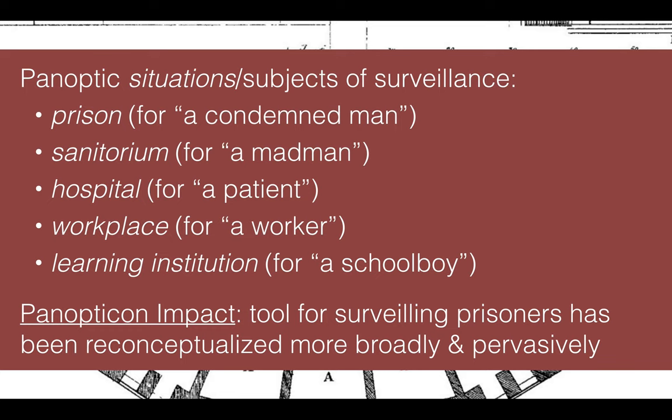Foucault extends the Panopticon idea beyond the prisoner to a range of subjects of surveillance. A prison holds a condemned man; a sanatorium holds a madman; a hospital holds a patient; a workplace holds a worker; and a learning institution holds a schoolboy or schoolgirl. As a result, the Panopticon has had a profound influence — originally a tool for surveilling prisoners, it has been reconceptualized more broadly and pervasively across society.